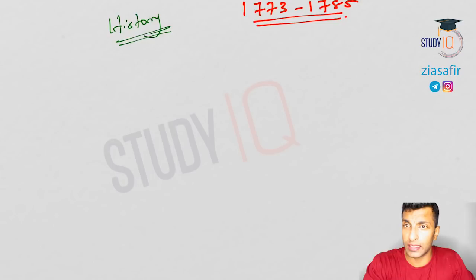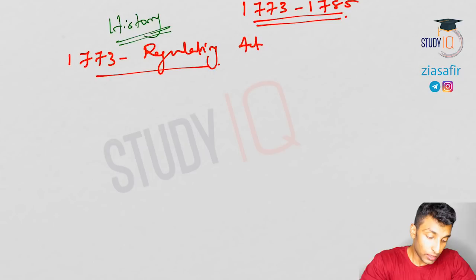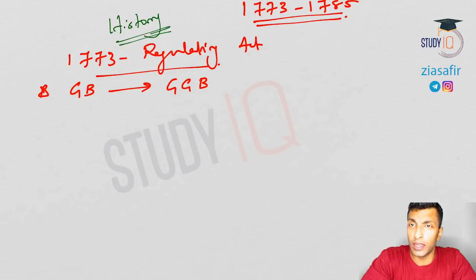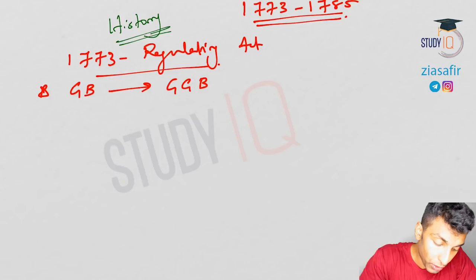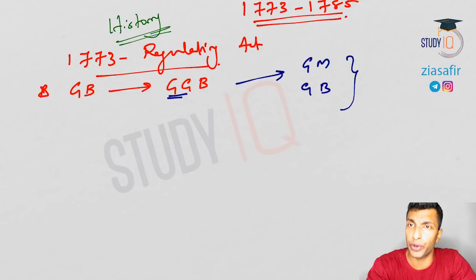We start with the 1773 Regulating Act. The first provision is that the Governor of Bengal became the Governor General of Bengal. This is a very important point — the post of Governor General is actually created here. Note that there were also a Governor of Madras and a Governor of Bombay operating in parallel across the three presidencies.